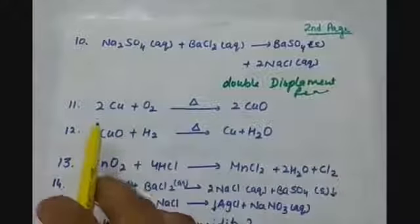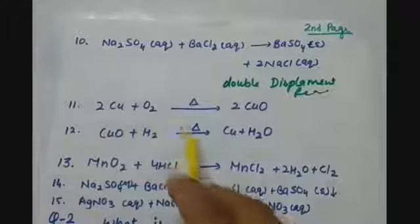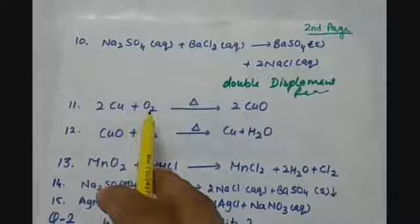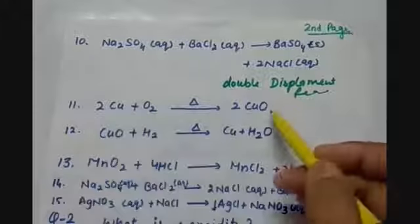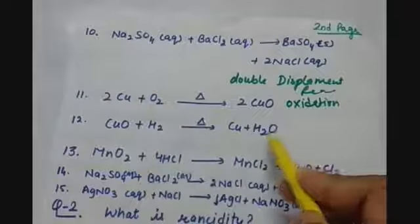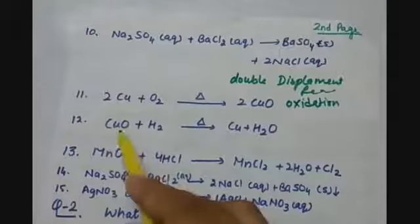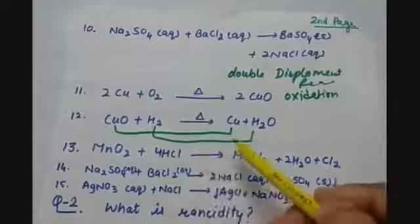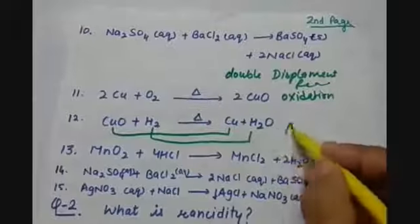Next, copper reacts with oxygen and on heating forms copper oxide. Oxygen is getting attached with copper, and oxygen addition is called oxidation. Then copper oxide reacts with hydrogen, and on heating forms copper and water (H2O). Here removal of oxygen is being done from copper, so copper oxide is getting reduced — that is reduction. So addition of oxygen is oxidation here and removal of oxygen is reduction, making this a redox reaction.